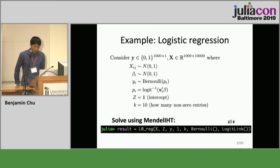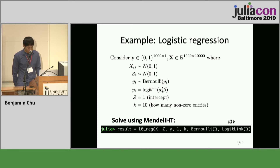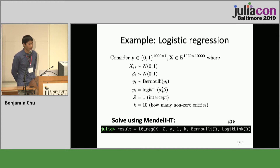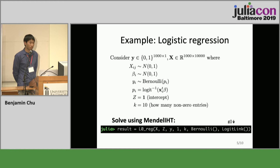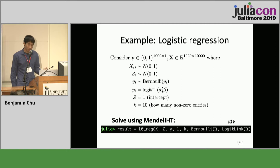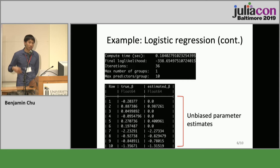Now I want to show you how to use my package. In this case we're considering logistic regression, but we have several distributions to choose from. Here y is binary — zeros or ones. I'm simulating a design matrix that is 1,000 by 10,000, which is a small example. Even though there are 10,000 covariates (also called features), I'm only saying that 10 of them are actually affecting the response and everything else is white noise. To use the package, it's just a one-line solution — one function that runs iterative hard thresholding and gives you the result.